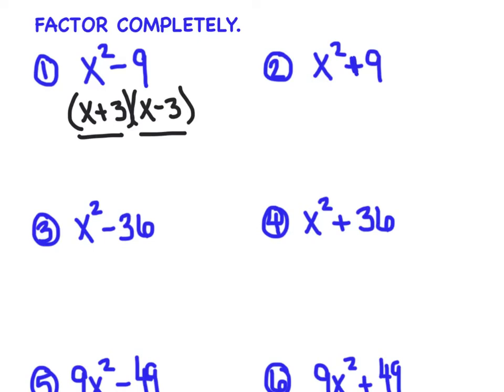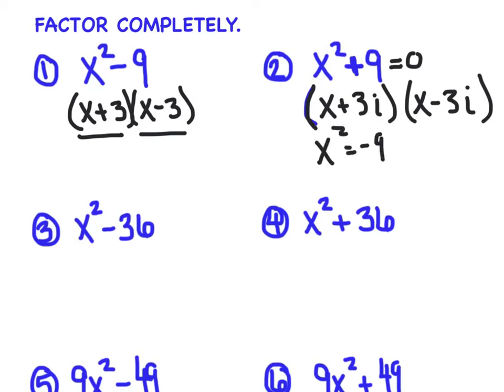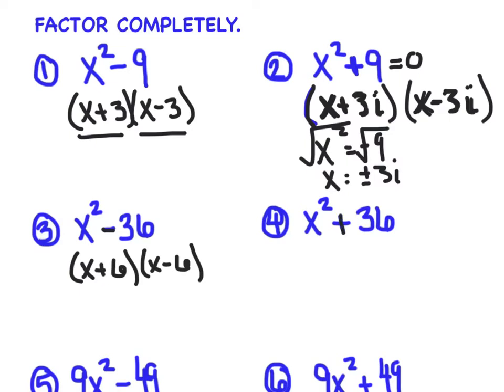Notice that these two factors, these two linear factors are conjugate pairs, and that's going to be true for every difference or sum of two perfect squares. The other thing I want you to notice is this was a second degree polynomial, and because it's a second degree, there's exactly two factors, and that's what the fundamental theorem of algebra is saying. The next one, and what makes this one different is now it's the sum of two perfect squares. I'm going to still have conjugate pairs. But in this case, it's going to be x plus three i and x minus three i, and those would be my factors.